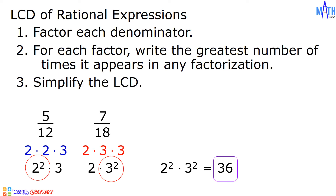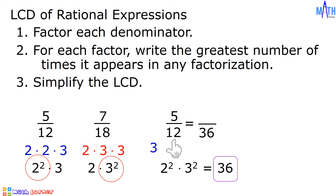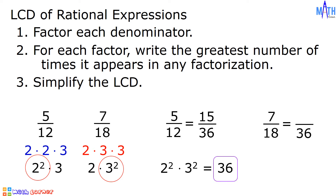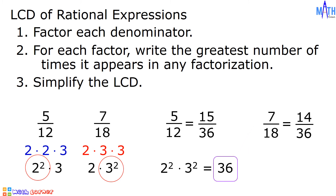Let us convert 5 over 12 to an equivalent expression having the LCD. 36 divided by 12 is equal to 3, and 3 times 5 is equal to 15, so 5 over 12 is equal to 15 over 36. Next, let us convert 7 over 18: 36 divided by 18 is equal to 2, and 2 times 7 is equal to 14, so 7 over 18 is equal to 14 over 36.